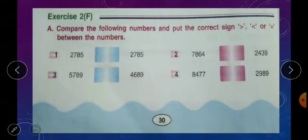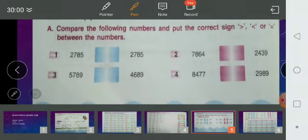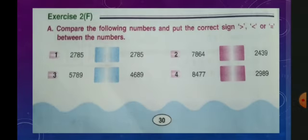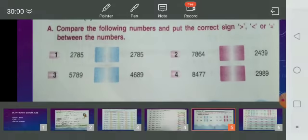First one: 2785 and 2785. Both numbers are equal, so we use the equal to sign.